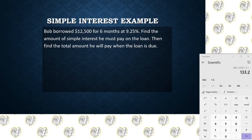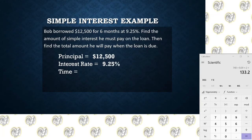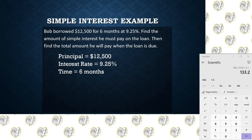But the process at the beginning is still the same. We're still looking for principal, interest rate, and time. The dollar amount is the principal, and that's $12,500. The interest rate is the percent number, and that's 9.25%. And then the time is the number measured in a length of time, and that's our six months. To convert the interest rate, we're going to divide by 100, and so that'll bring us to 0.0925 — that's just 9.25 divided by 100.